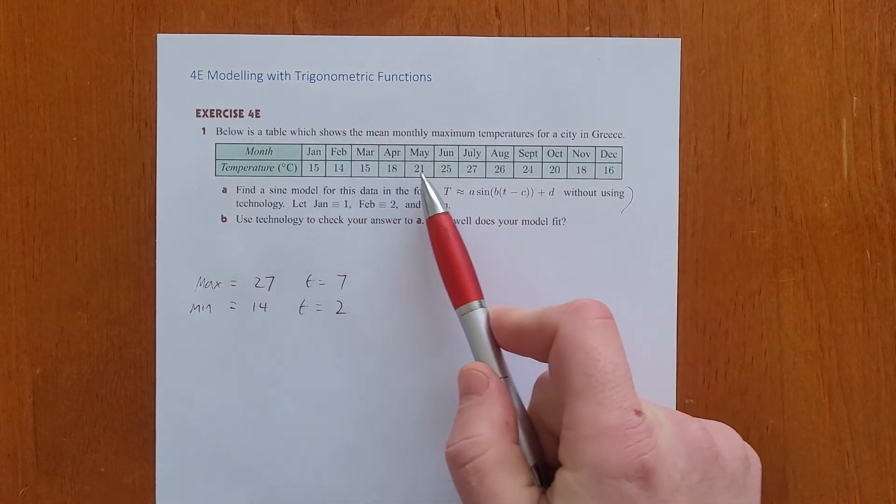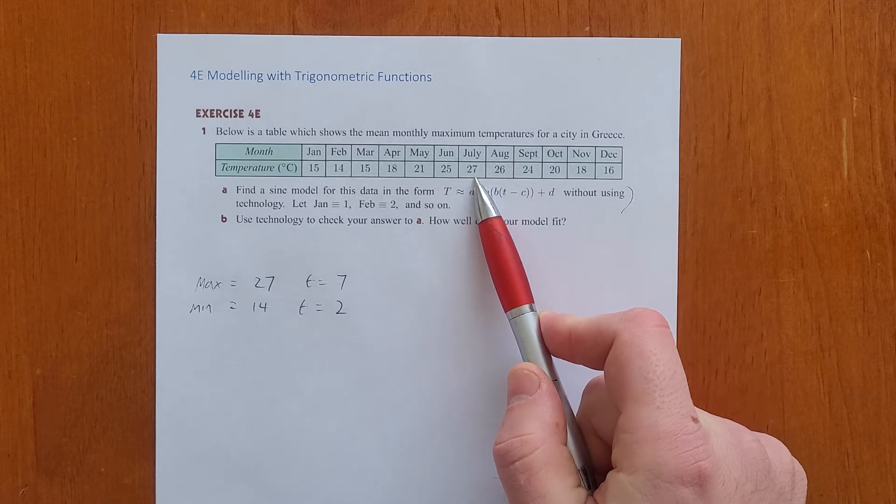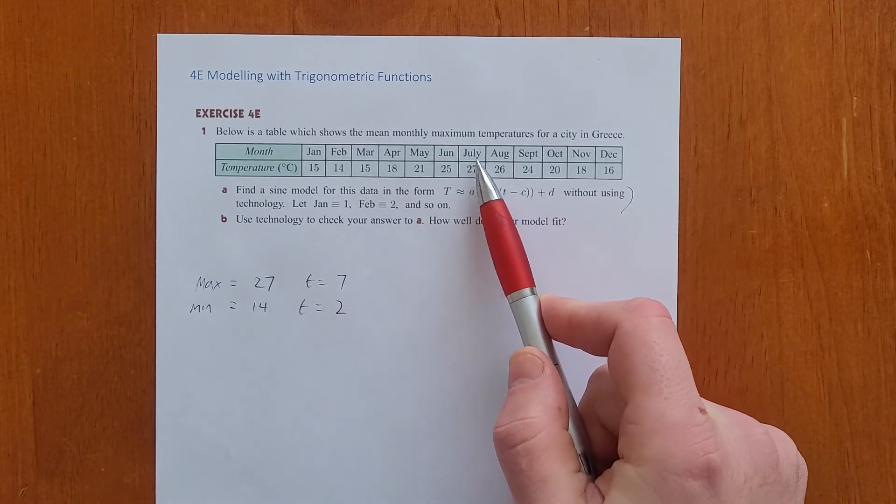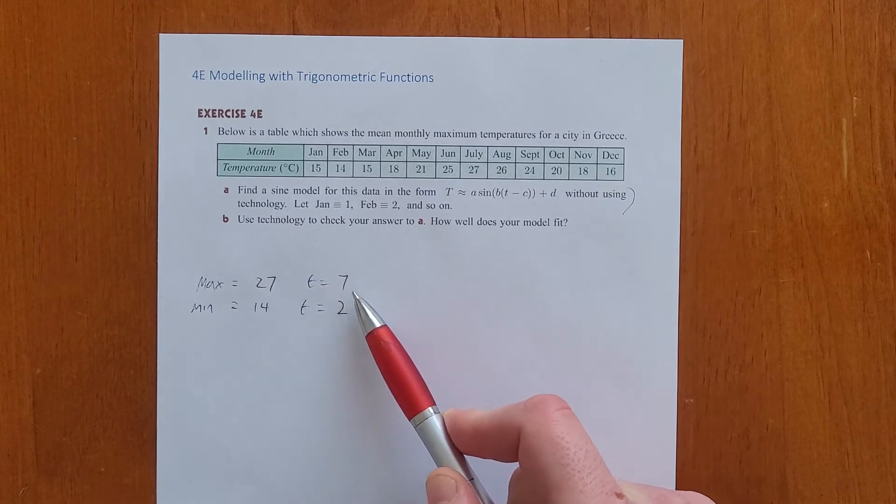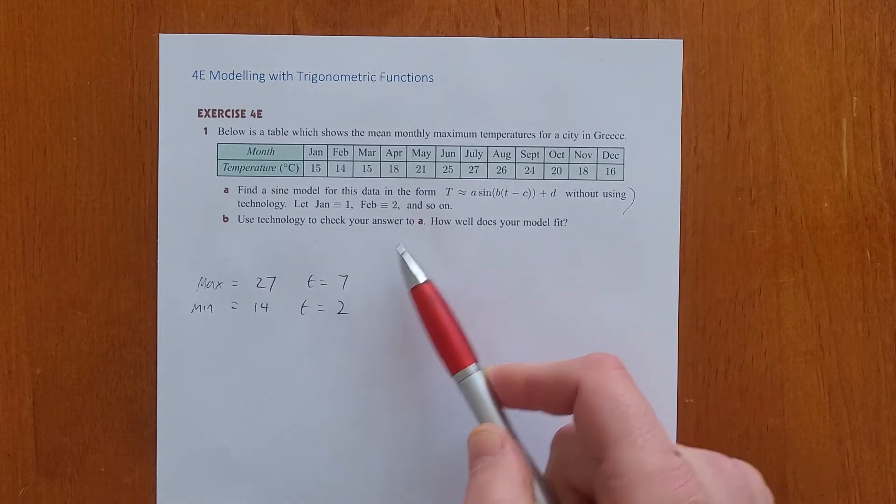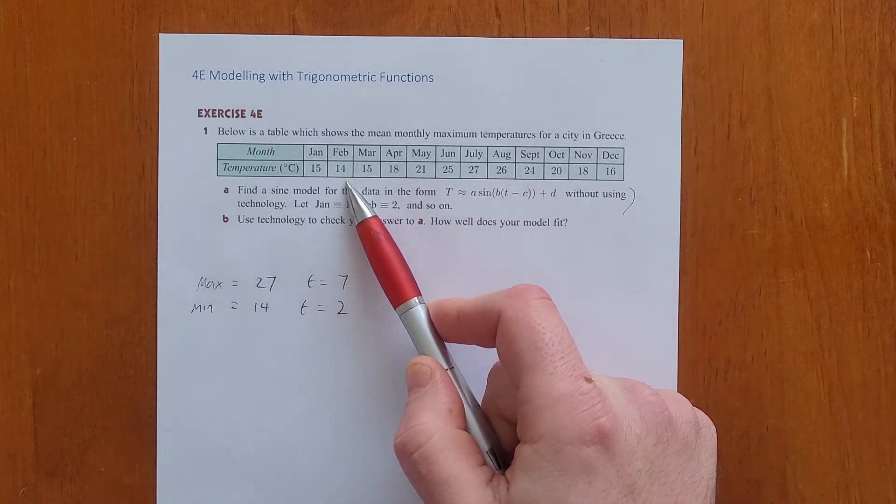Looking along here, the highest temperature occurs in July, and that's 27 degrees. So the maximum temperature is 27 degrees, and it occurs in July. And the minimum temperature is 14 degrees, and that occurs in February.